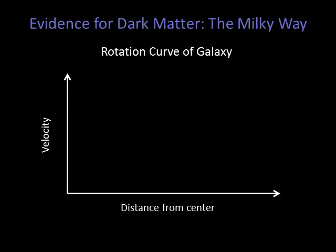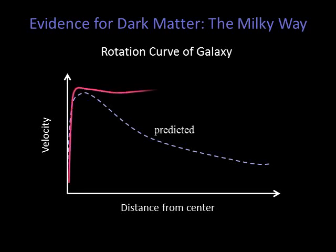If we were to make a rotation curve of our galaxy — that is, a plot of the velocity of the stars in our galaxy versus their distance from the center — we would expect to see something like this: fast-moving stars near the central bulge and slower ones farther out. But instead, this is what we see. The rotation curve is flat — stars near the center are moving at the same velocity as stars on the edges.